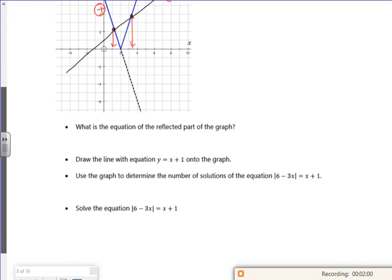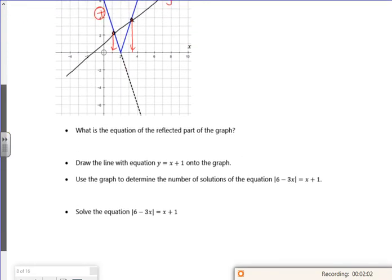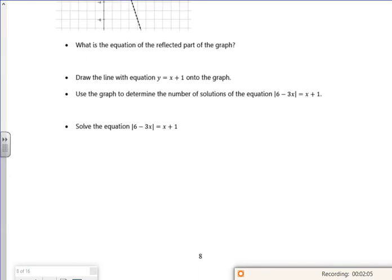So what I want to do is look at when 6 minus 3x is positive. So I'm going to look where it's positive. So that's plus 6 minus 3x is equal to x plus 1. I'm also going to look where the modulus bit is negative, the bit which was reflected up. So that's minus 6 minus 3x is equal to x plus 1. And now if I just expand my brackets and rearrange it.